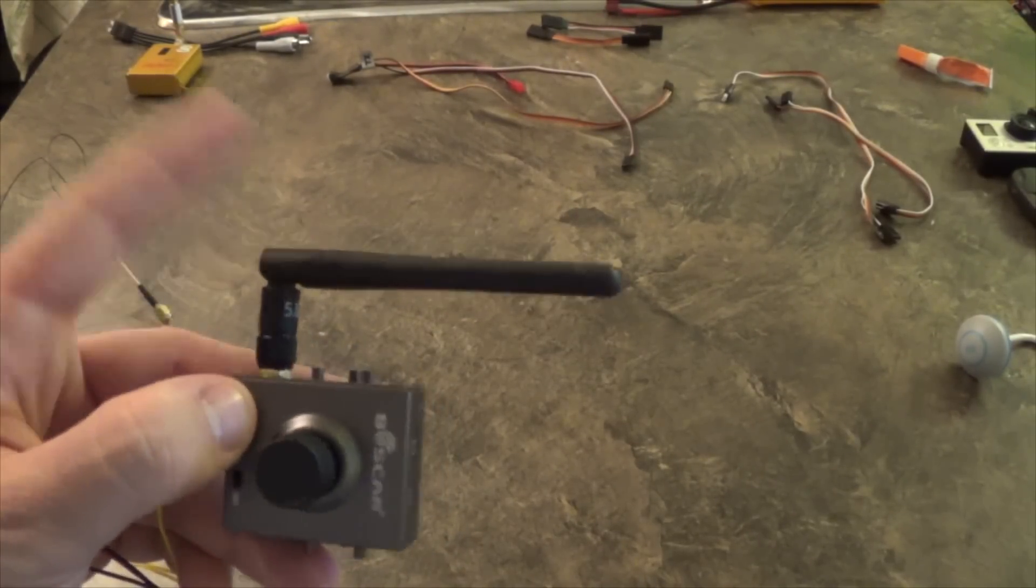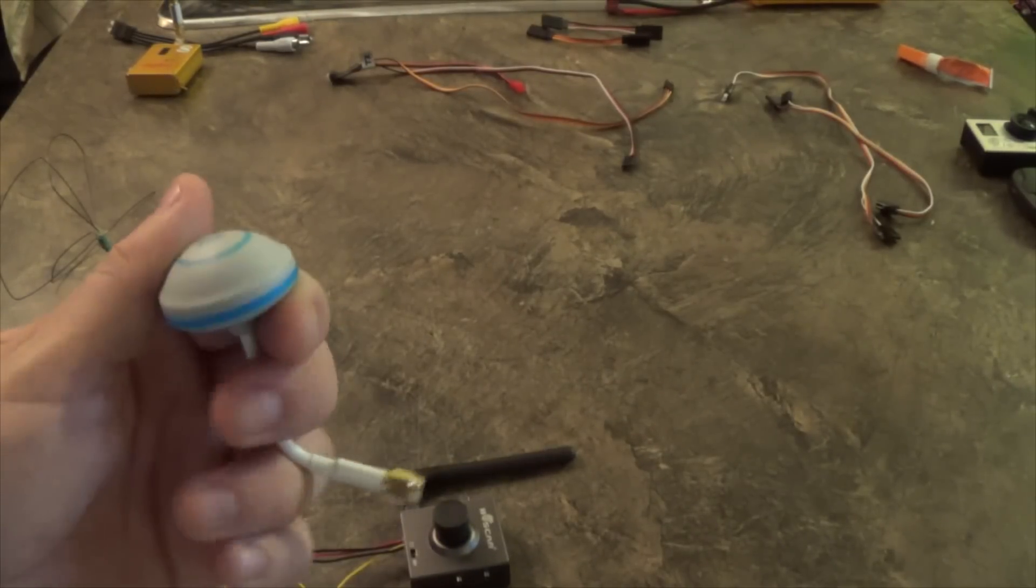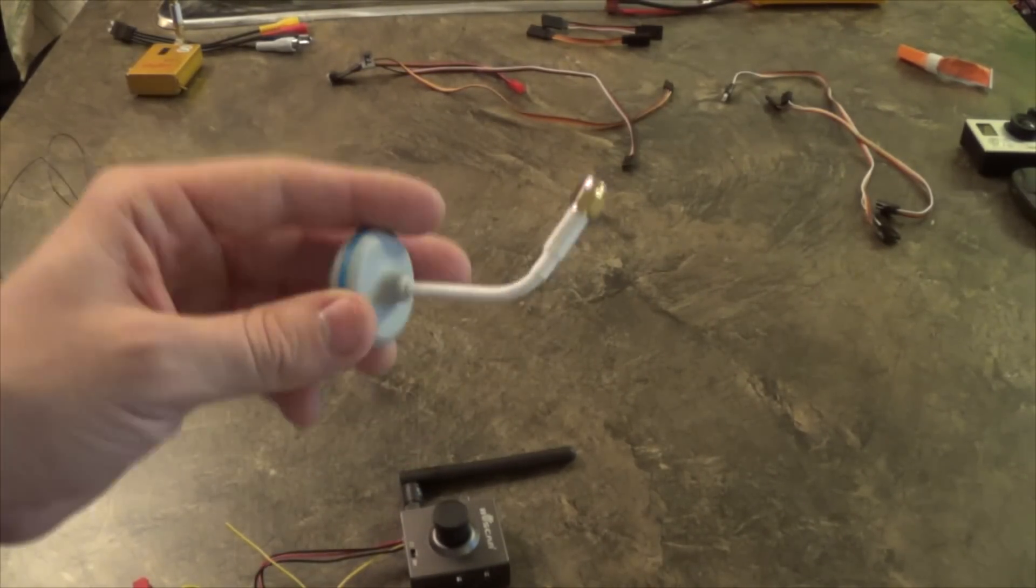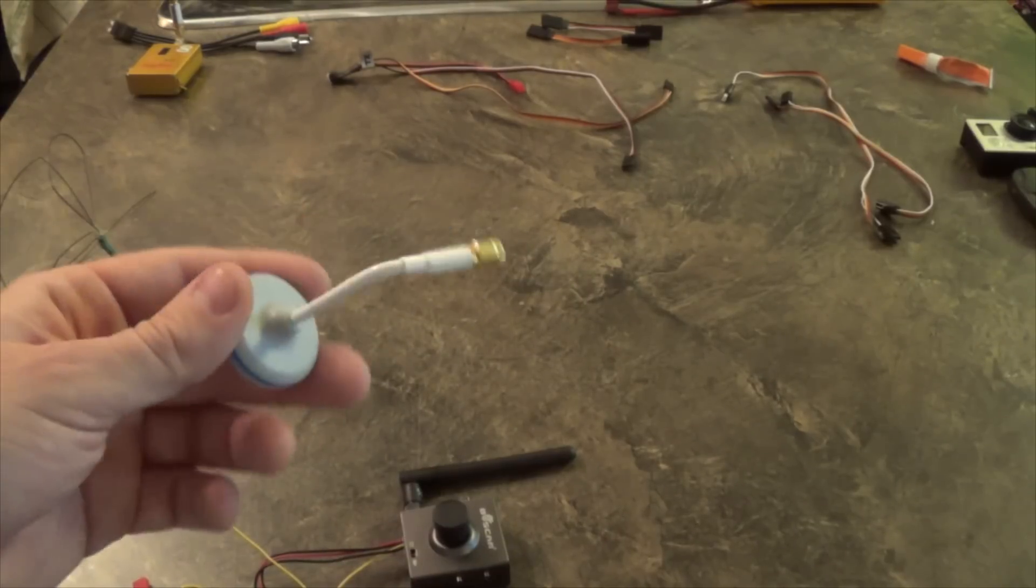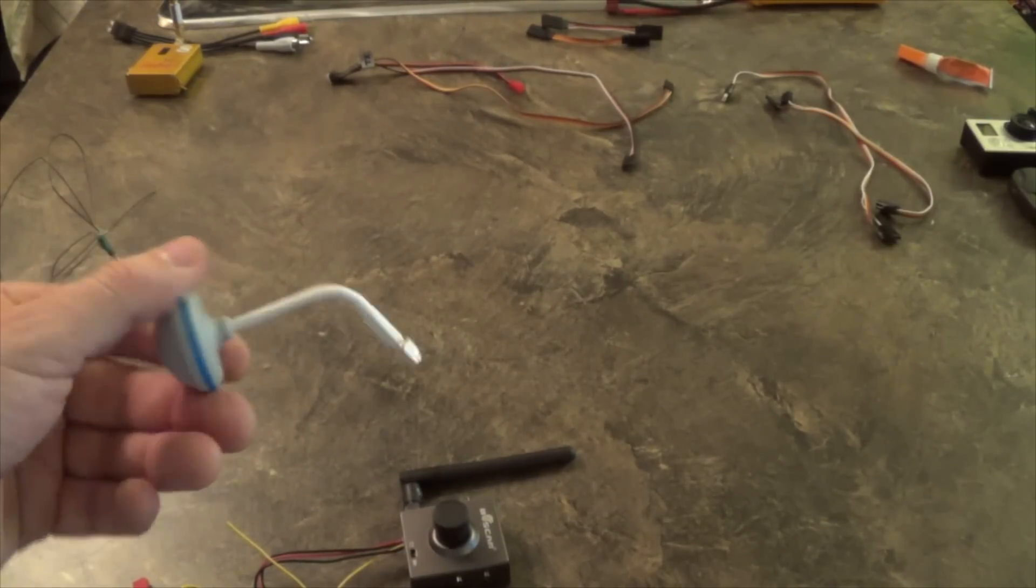It comes with the factory linear polarized antenna at 5.8 gigahertz, but keep in mind you can also change out these antennas. If you want the circular polarized antenna like this one, this is 5.8 gigahertz. This is RX but there should be a TX one. If you want to change them out, that's okay.